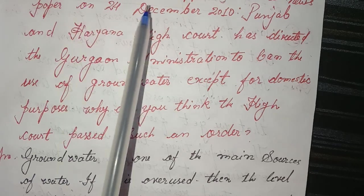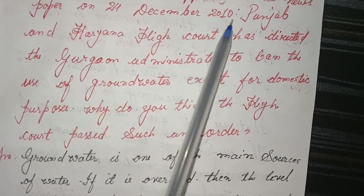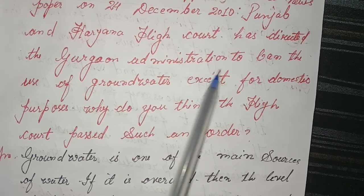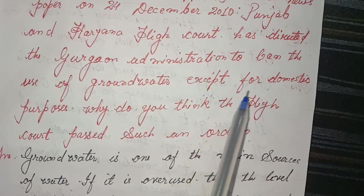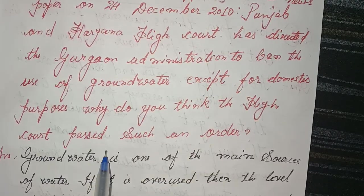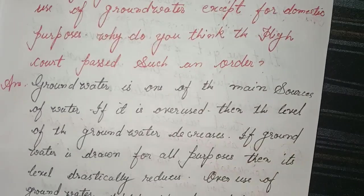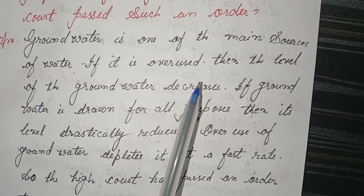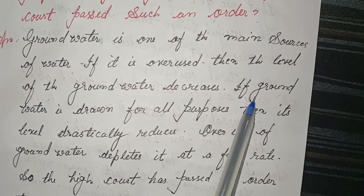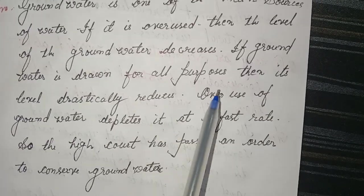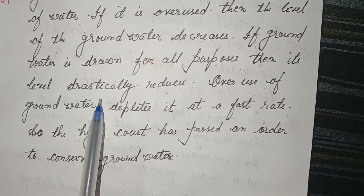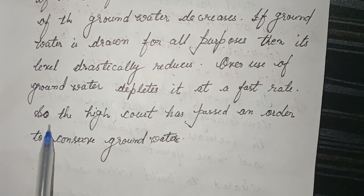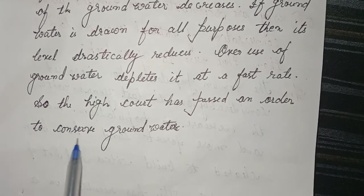Third think-and-answer: A news item from a newspaper dated 24 December 2010 states that the Punjab and Haryana High Court directed the administration to ban the use of groundwater except for domestic purposes. Why do you think the High Court passed such an order? Answer: Groundwater is one of the main sources of water. If it is overused, the level of groundwater decreases drastically. Overuse of groundwater depletes it at a fast rate, so the High Court passed an order to conserve groundwater.